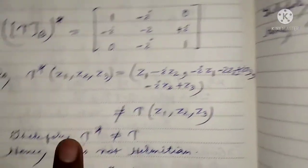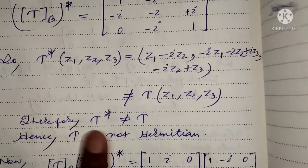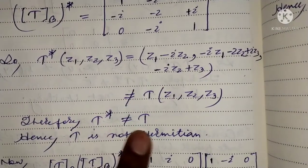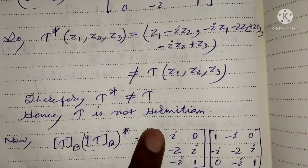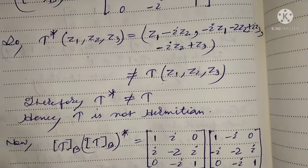Therefore t* is not equal to T, hence T is not Hermitian.